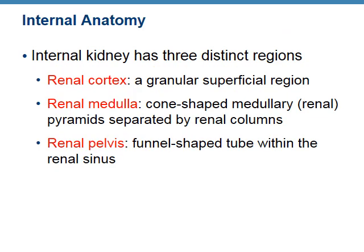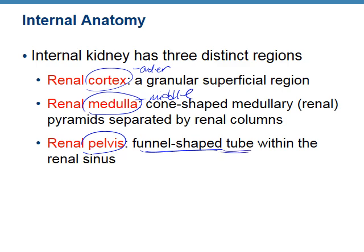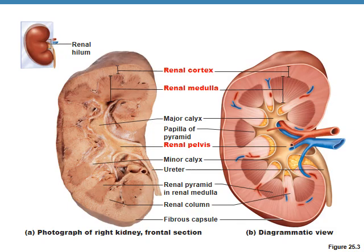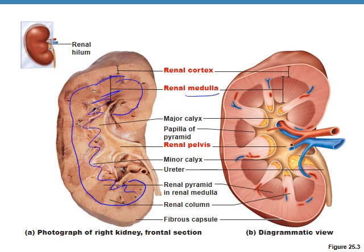We also have distinct regions within the kidneys. We have the cortex — the outer region; the medulla — the middle region; and then the renal pelvis, a funnel-shaped section of tube that serves as a collection point. The cortex runs all the way around, the medulla is the middle part, and the renal pelvis is the collection point that leads to the ureter.